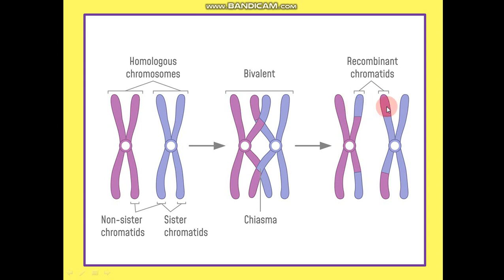This process is known as crossing over. Chiasma — plural chiasmata — is the X-shaped structure formed due to crossing over between the non-sister chromatids of the paired homologous chromosomes. This diagram is important; it is on page 17, figure 2.12 in your book.